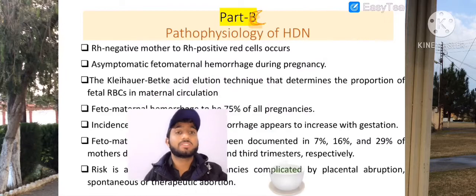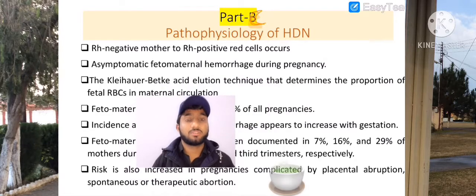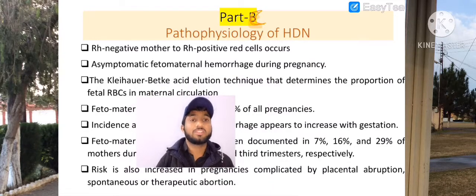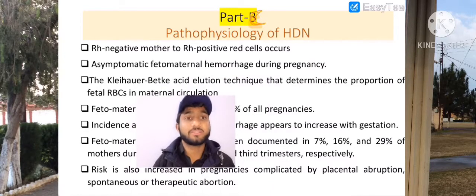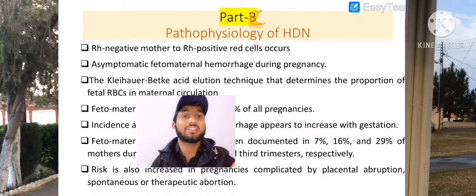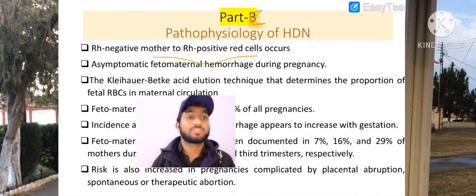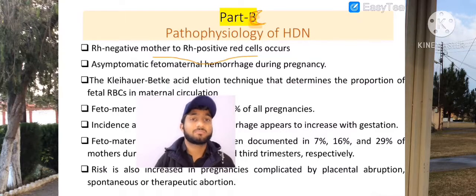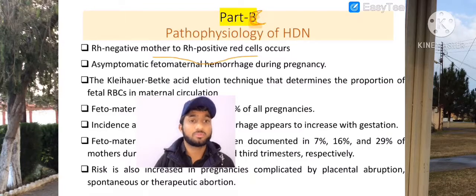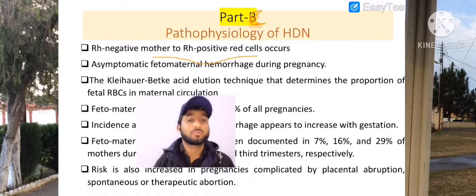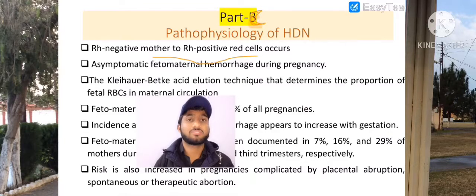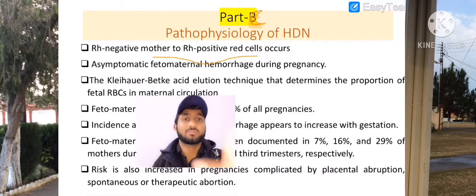The first problem which comes during HDN — Hemolytic Disease of Newborns — is RH negative mother to RH positive red cells. This means that when an RH negative mother has a baby with RH positive cells, and these blood cells react, we have HDN occurring.